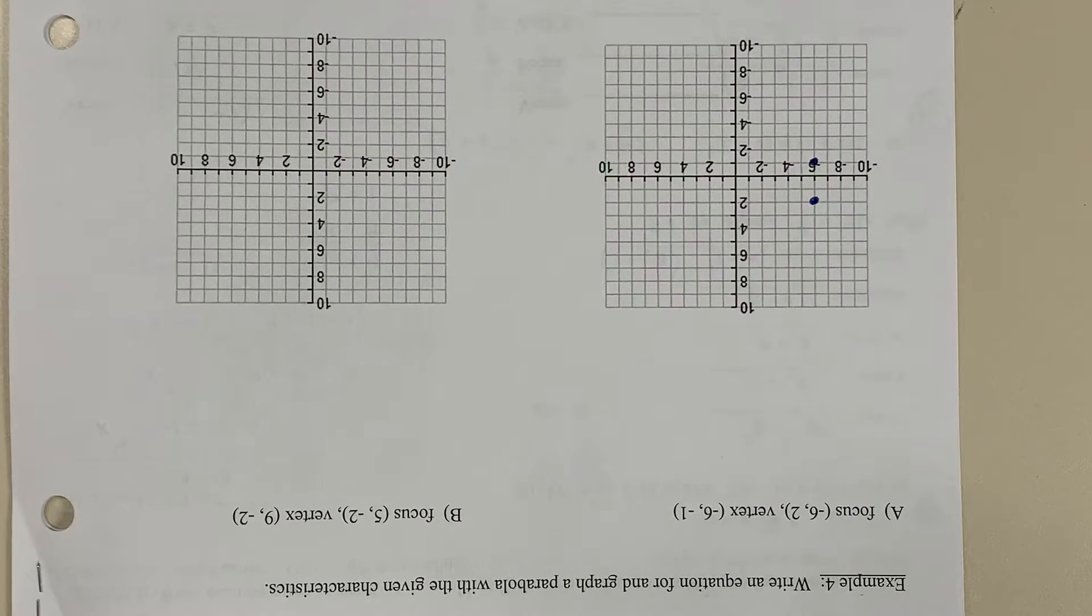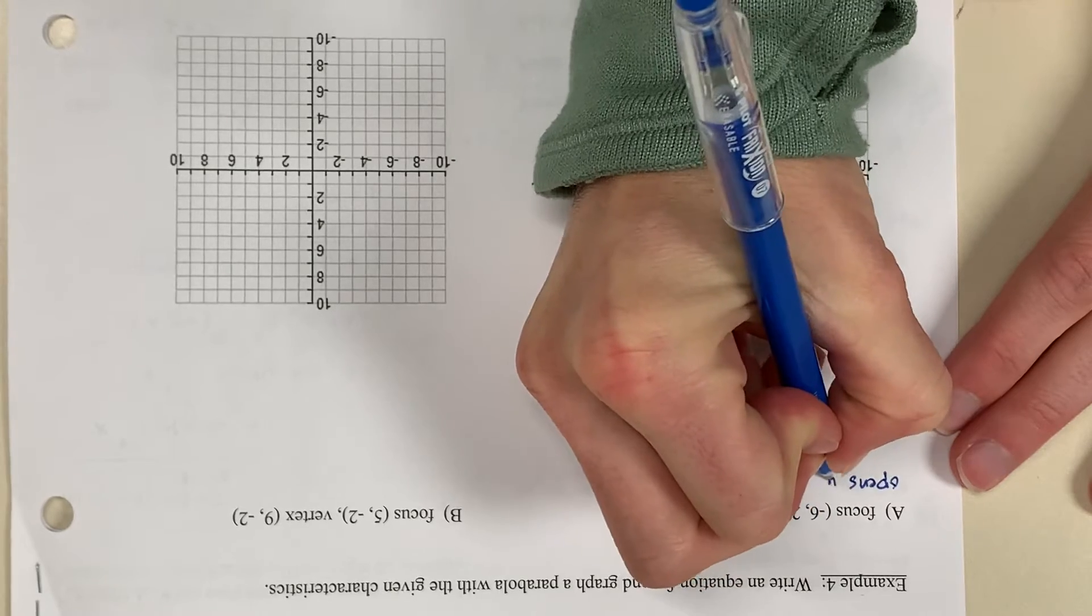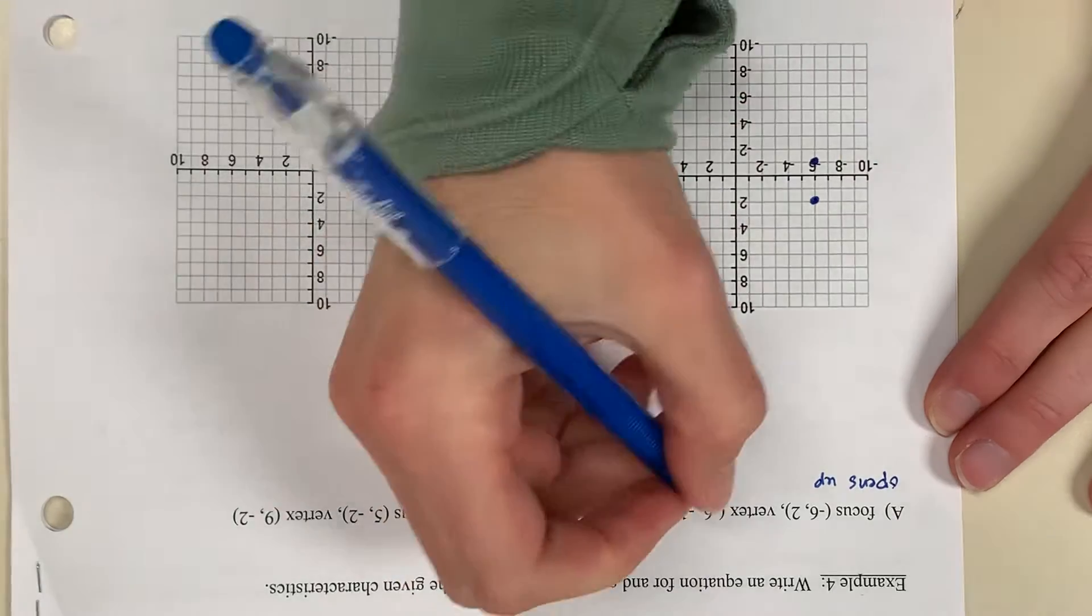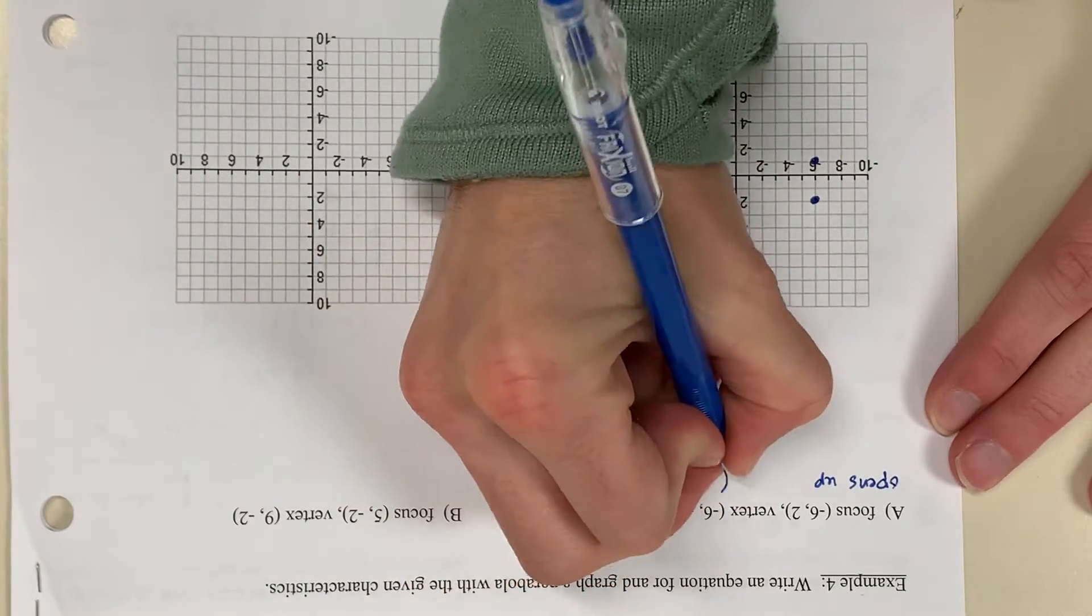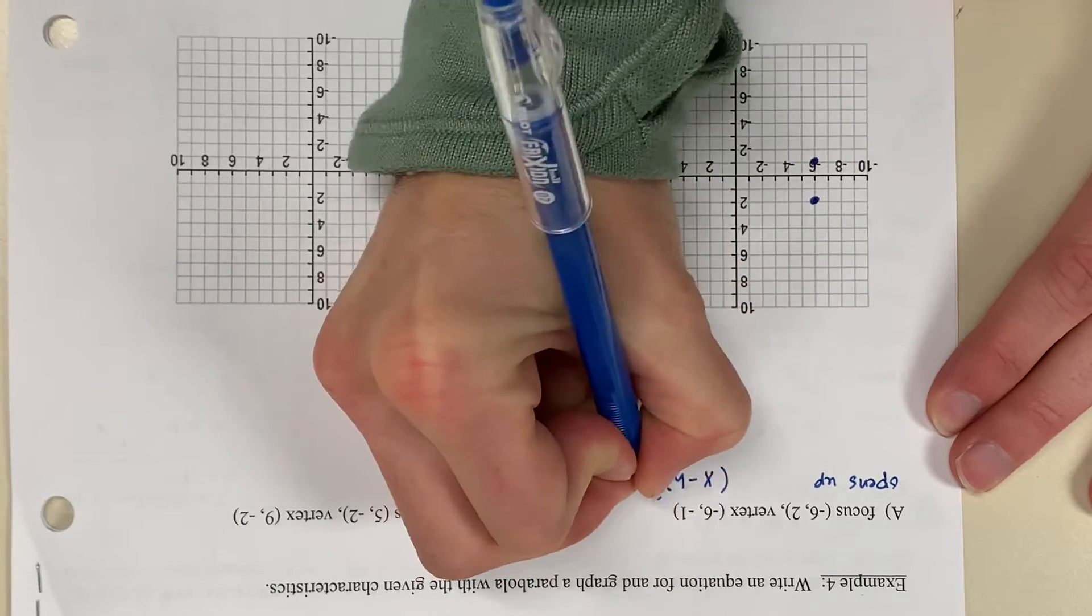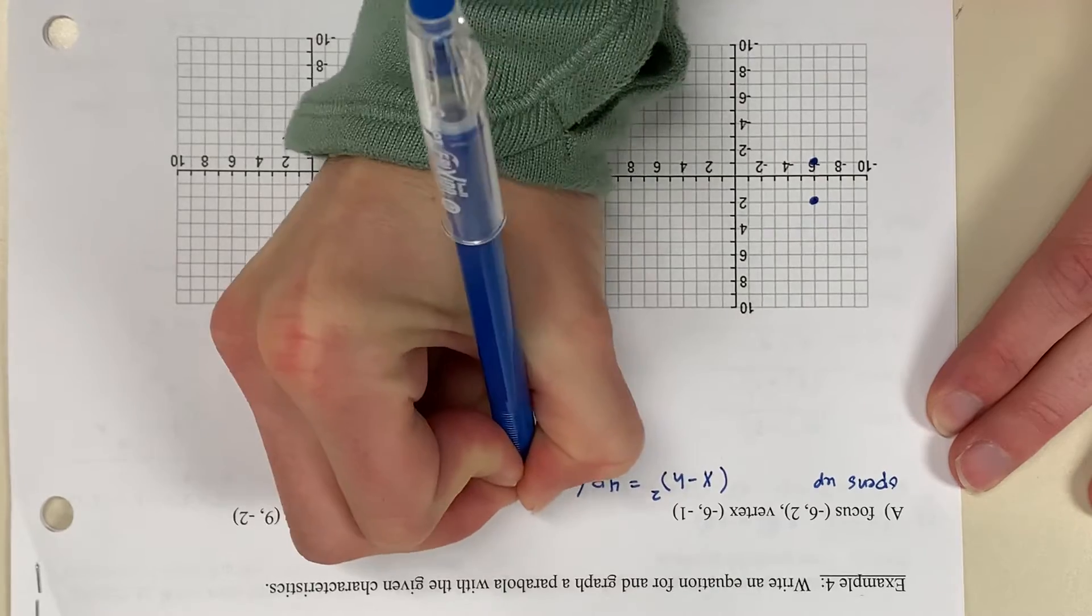Because the focus is directly above the vertex, this tells me that my parabola is going to open up. If the parabola opens up, then the standard form of my conic is x minus h quantity squared equals 4p times the quantity y minus k.